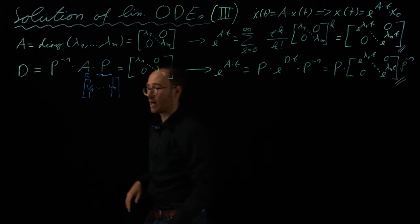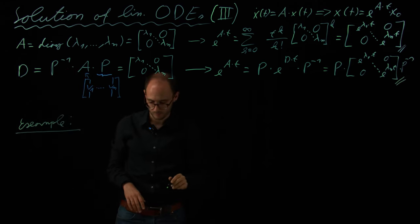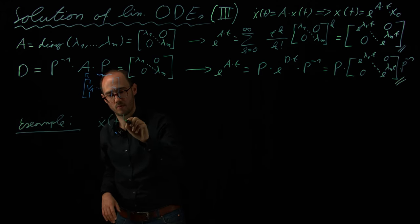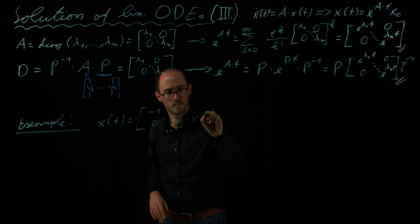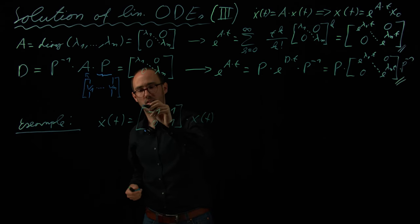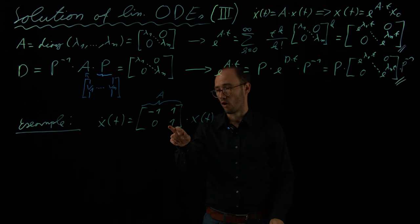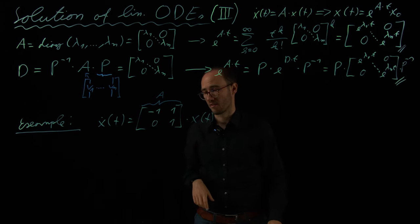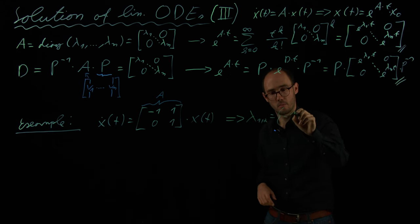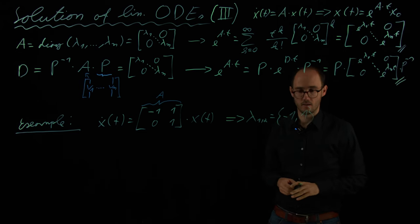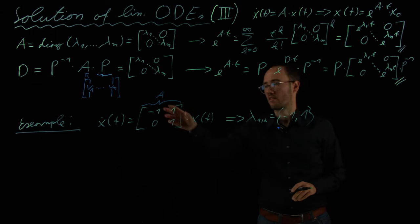Let's have a simple example. We have x-dot of t equal to the matrix [[-1, 1], [0, 1]] times x of t. This is our A. We can see from this A that it has a triangular form, so we know that on the main diagonal we have the two eigenvalues, which are minus 1 and 1. So we can directly derive lambda 1 equals minus 1 and lambda 2 equals 1. Since these two eigenvalues are distinctly different from each other, we know we will have two different eigenvectors and therefore a diagonalizable A matrix.